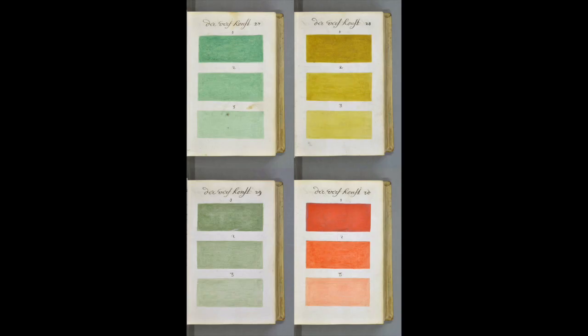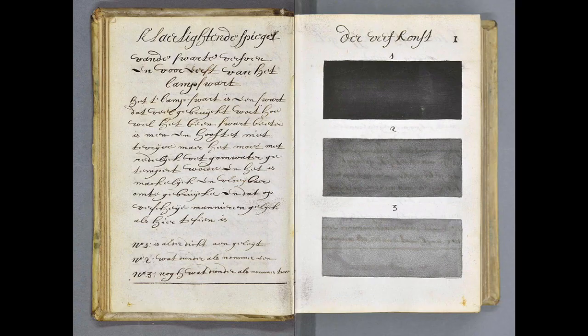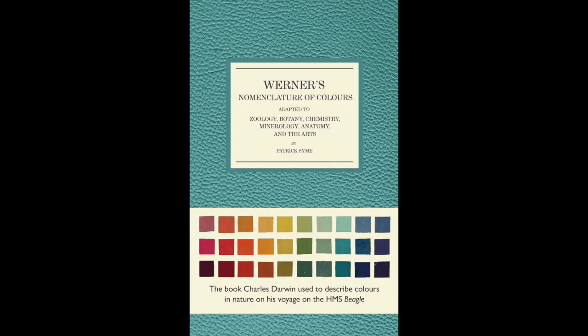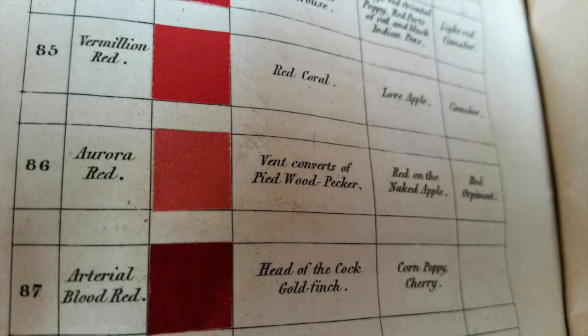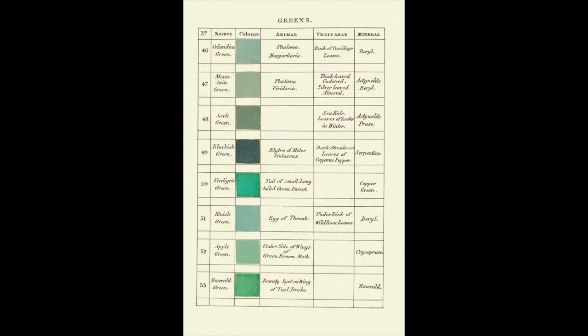Then in the 19th century, a man named Werner wrote the guide to colors that was adapted for zoology, botany, chemistry, mineralogy, and anatomy. It's a preeminent guide to color and it's classified for artists, scientists, naturalists, and it gave all these handwritten details describing where each shade could be found on an animal, plant, or mineral. It's like an amazing book.